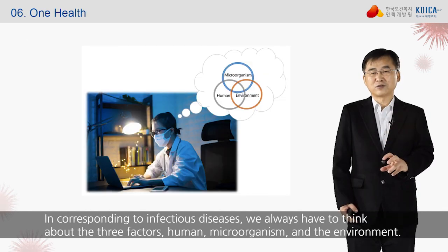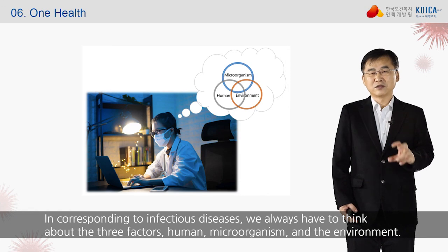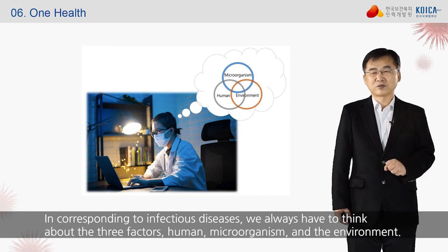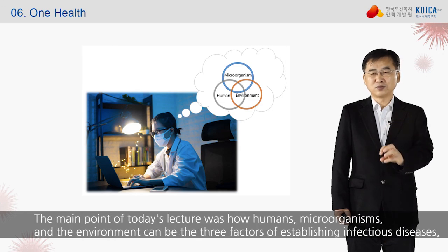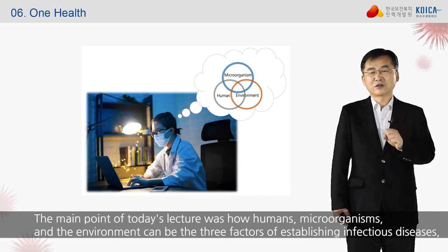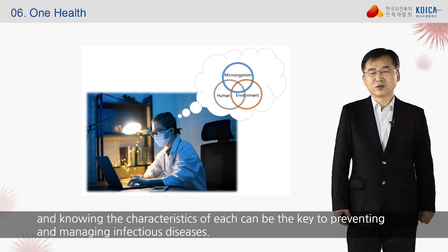In corresponding to infectious diseases, we always have to think about the three factors: human, microorganism, and the environment. Also, the One Health approach — preserving the natural environment and avoiding environmental destruction — would be key. The main point of today's lecture was how humans, microorganisms, and the environment are the three factors establishing infectious diseases, and knowing the characteristics of each is the key to preventing and managing infectious diseases.